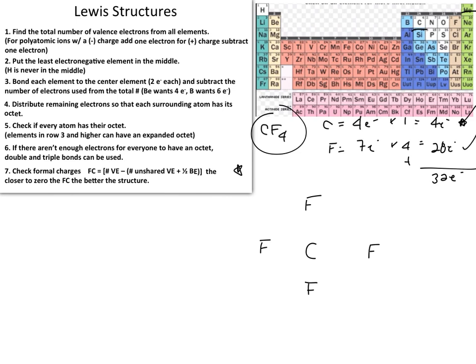We've finished steps one and two, so we move on to step number three: bond each exterior element to the central element. In this case, fluorine is going to bond to carbon four times.